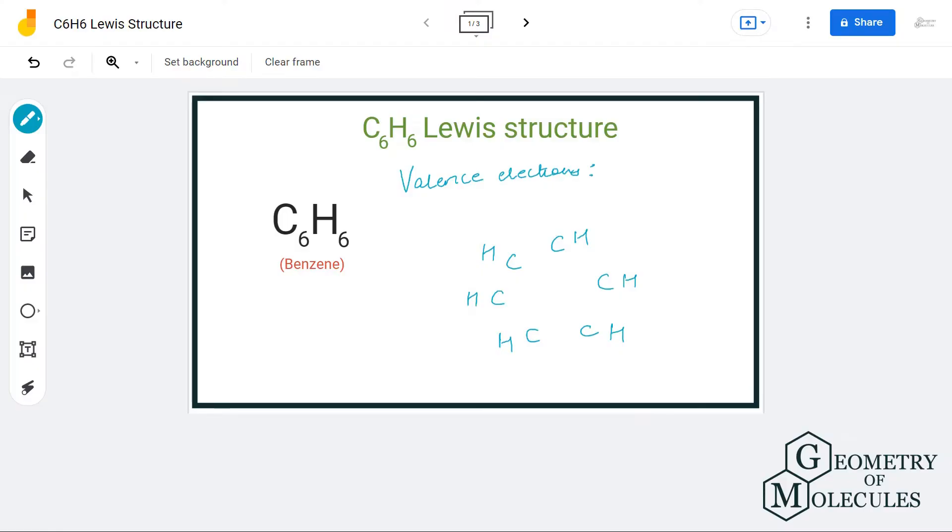Hi guys, welcome back to our channel. In today's video, we are going to help you with the benzene Lewis structure, which has a chemical formula of C6H6. To determine its Lewis structure, we will first find out the total number of valence electrons.